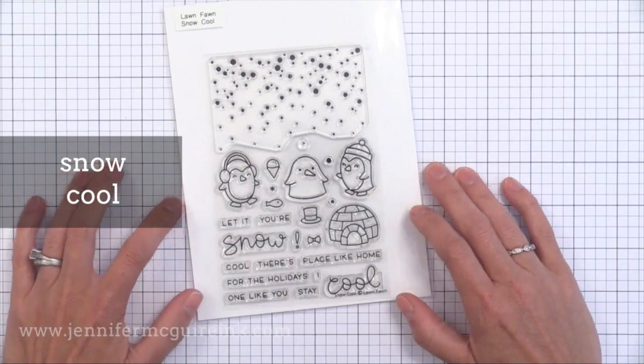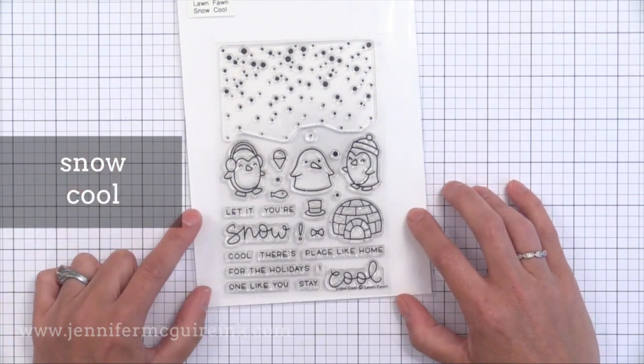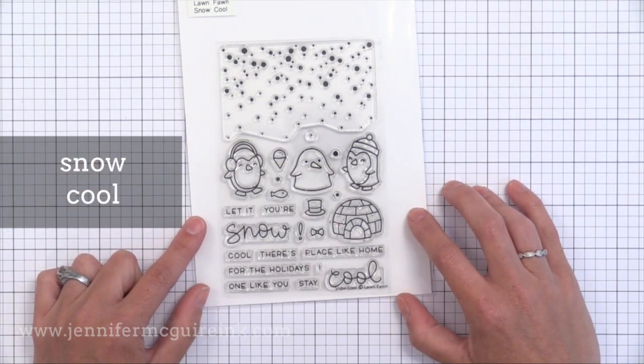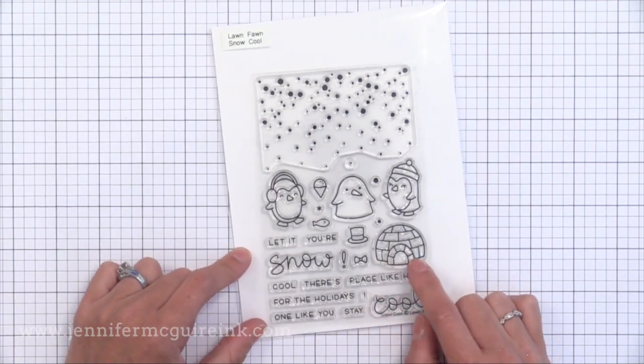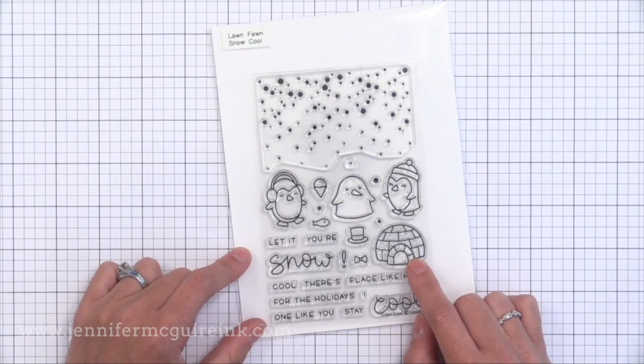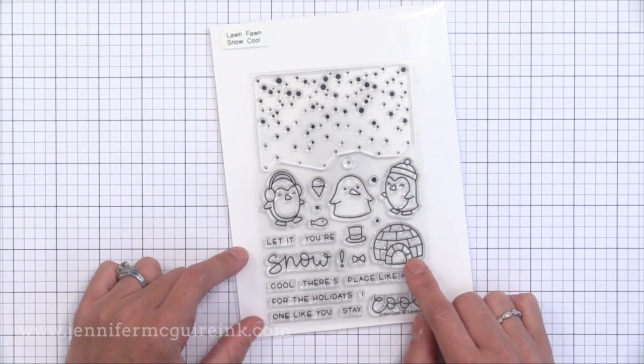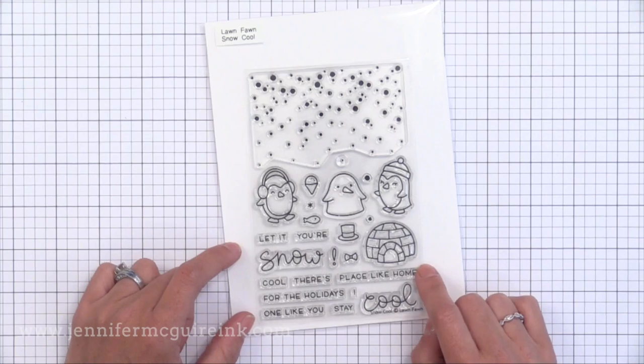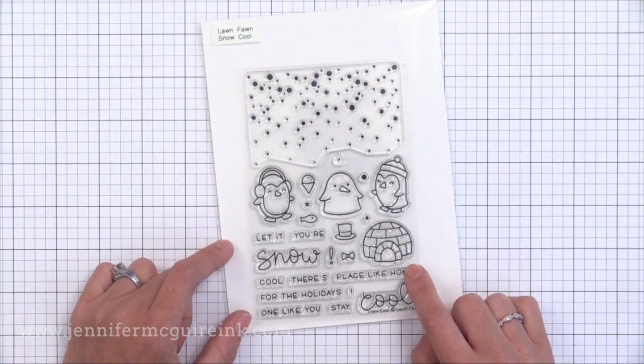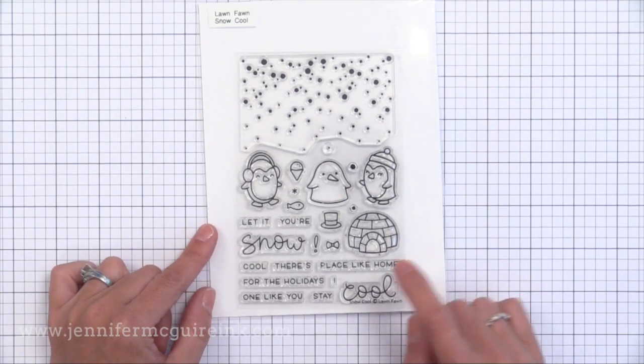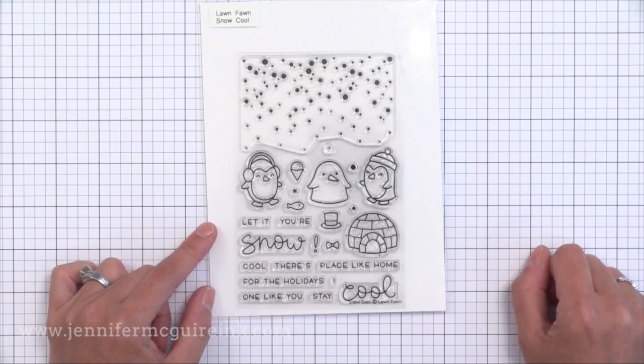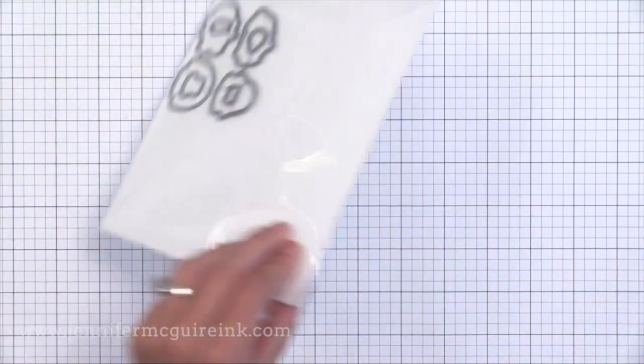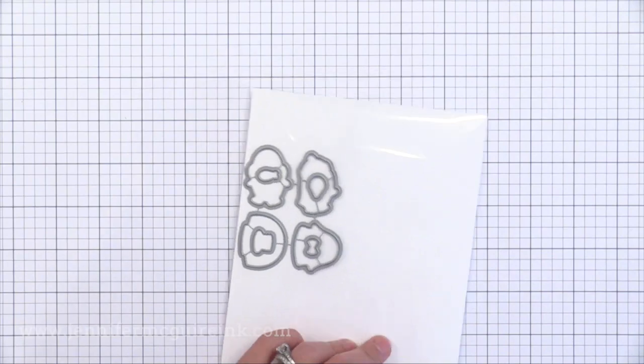This brings us to Snow Cool which is another sweet stamp set. I like that they included the snow fall at the top so you can really build a nice scene. The igloo is absolutely adorable and they even have a snow penguin. You can put a little hat on them and the bow tie and even put like an ice cream cone in the penguin's hand and a lot of fun sentiments. I think that Snow Fall would be really pretty white heat embossed on a piece of vellum and then have the little penguins below it.